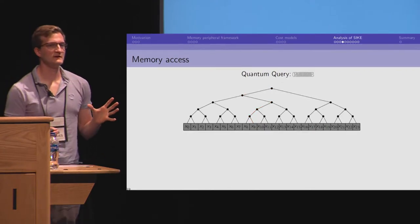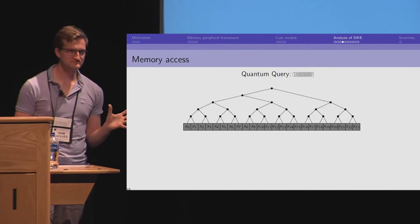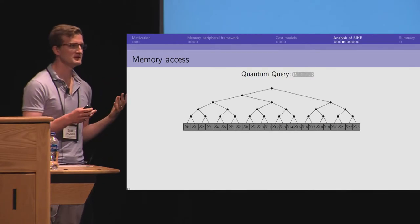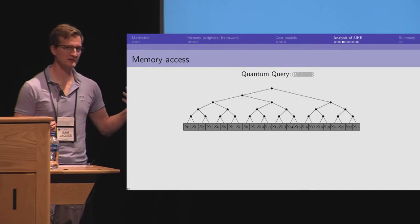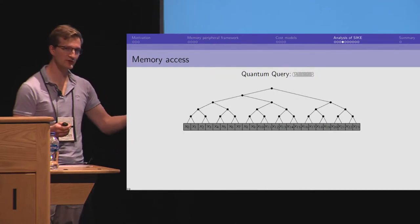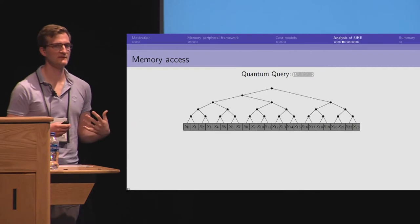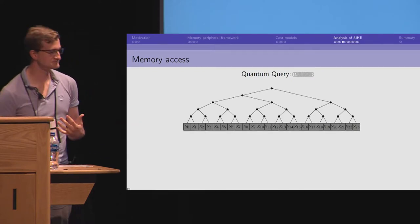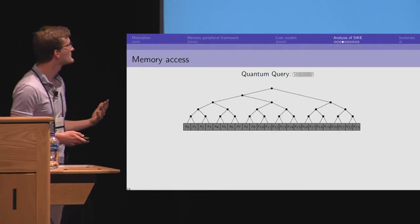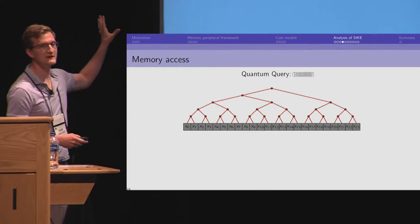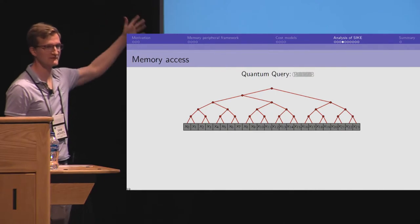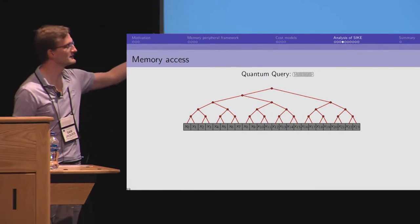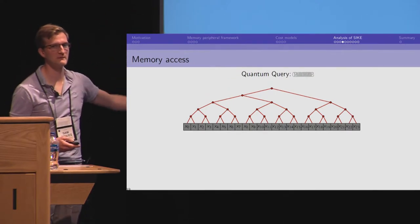With a quantum query, it might be in superposition. And so, the classical controller cannot tell what memory access they need to return because they cannot read anything about the input without destroying the input. So, what they have to do, the memory controller has to apply gates for every possible input because they don't know what they're getting. And it might be a superposition of every possible access. So, this is now a linear number of gates in the size of the memory.